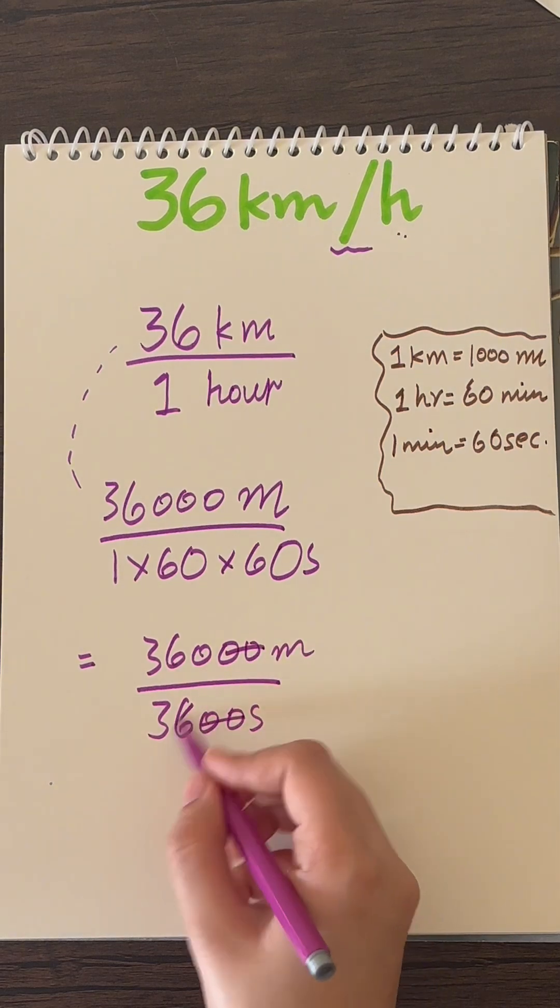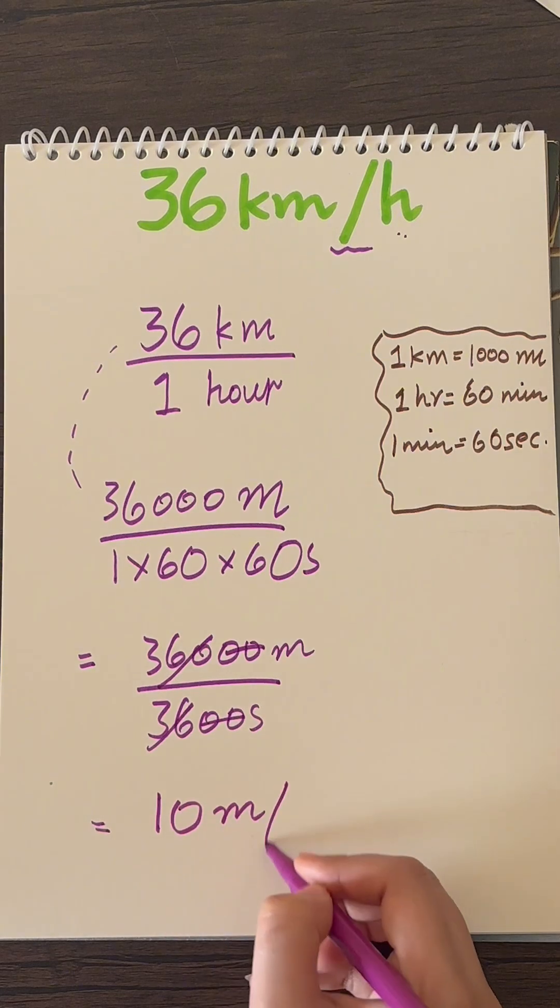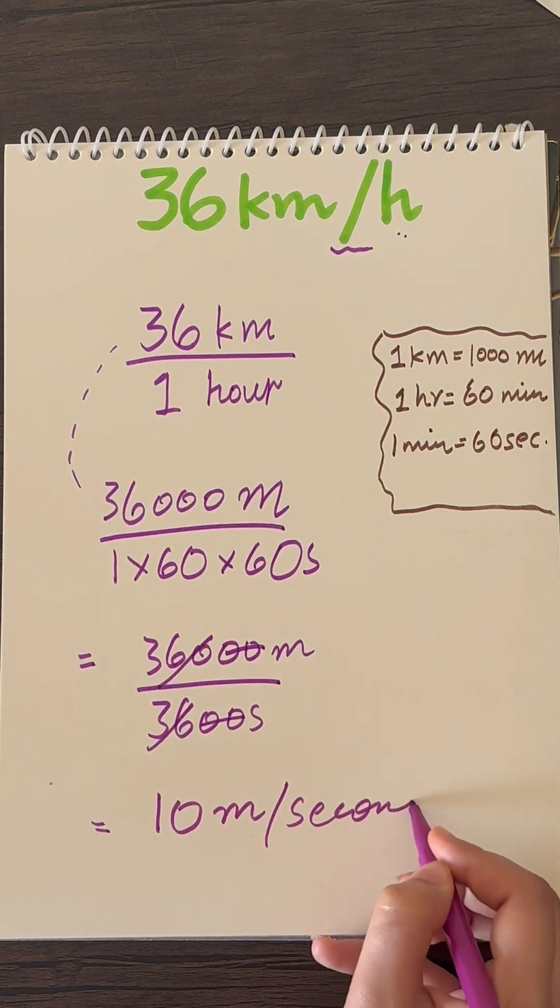Now simply cut the zeros with zeros, and 36 times 10 is 360. So we are left with 10 meter per seconds. And that's our answer.